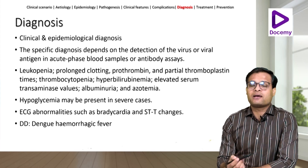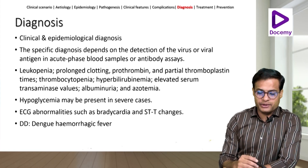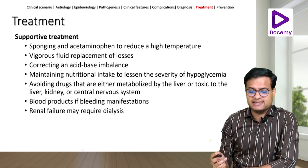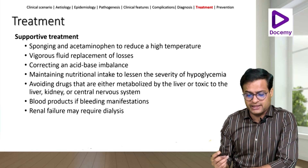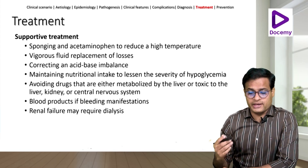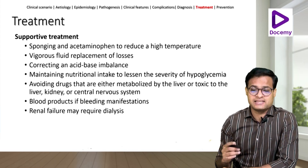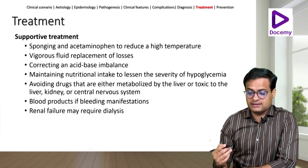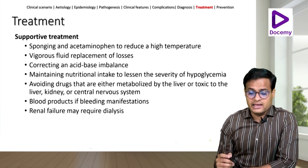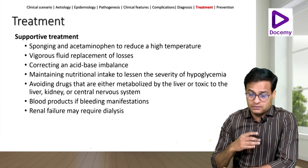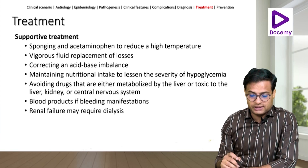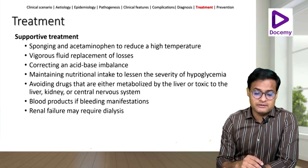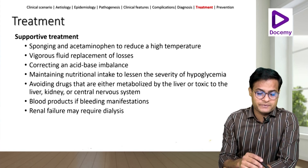Differential diagnosis includes any viral hemorrhagic fever, including dengue. Treatment is mainly supportive: sponging and acetaminophen to reduce high temperature, vigorous fluid replacement for losses, correcting acid-base imbalance, maintaining nutritional intake to lessen the severity of hypoglycemia, avoiding hepatotoxic and renal toxic drugs, blood products if there are bleeding manifestations, and dialysis if renal failure occurs.